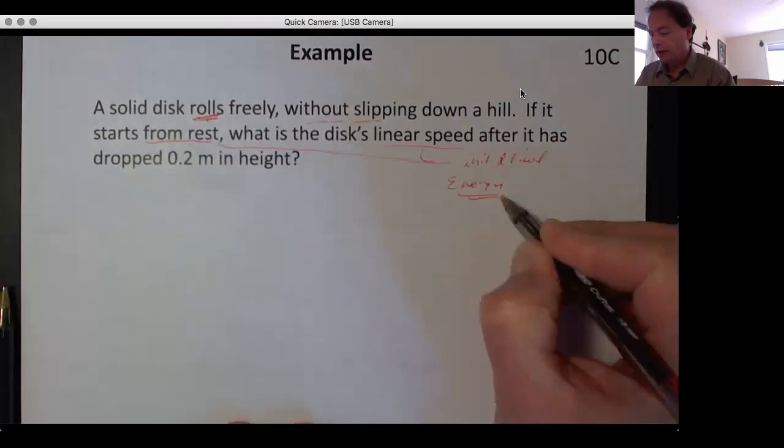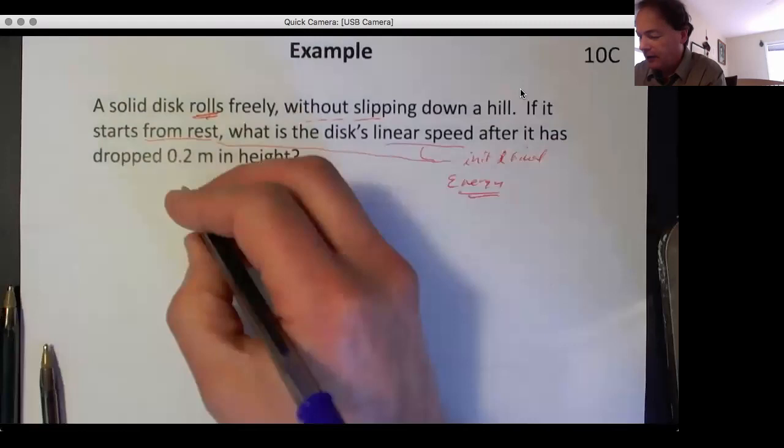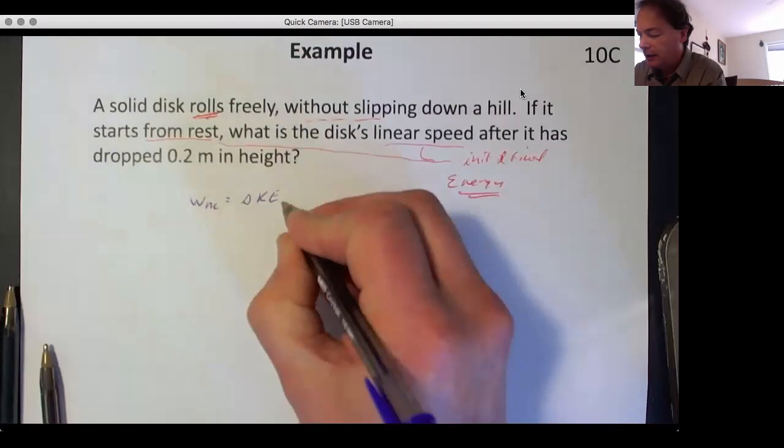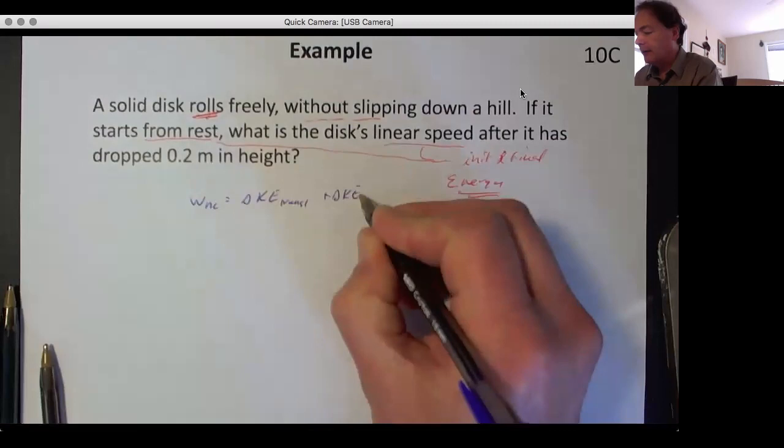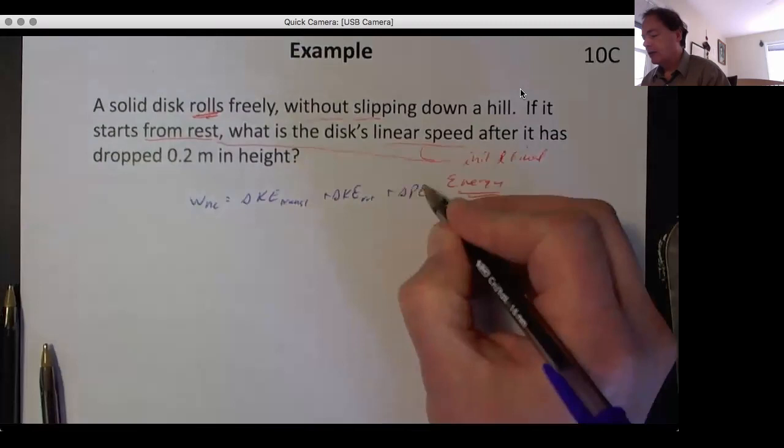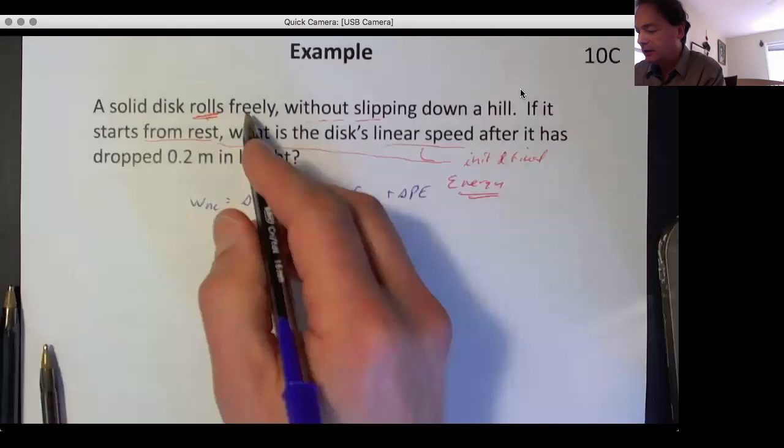So we start off with our energy equation. We're non-conservative: ΔKE translational plus ΔKE rotational plus ΔPE. And what we have in this case is 'freely,' so that's this being equal to zero.